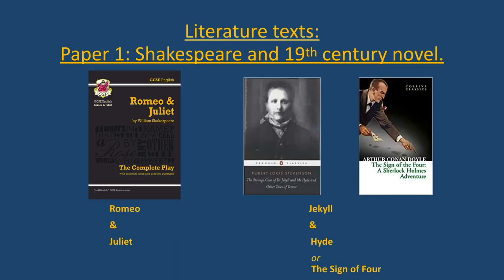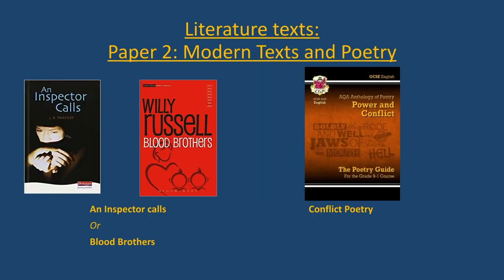Your literature texts: for Paper One you study Shakespeare and the 19th century novel — Romeo and Juliet, and then either Jekyll and Hyde or The Sign of Four. For Paper Two, modern texts and poetry, you study either An Inspector Calls or Blood Brothers, both plays, and the conflict section of the AQA Anthology of Poetry. And that's your English GCSE in a nutshell.